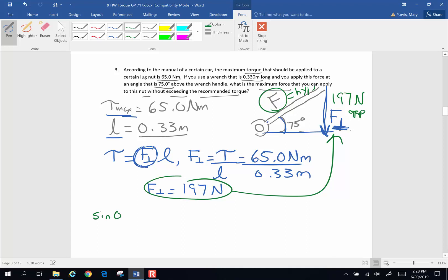Hypotenuse is going to be equivalent to opposite divided by the sine of the angle. The opposite is 197 newtons. Divided by the sine of 75 degrees.